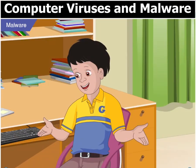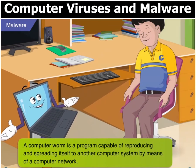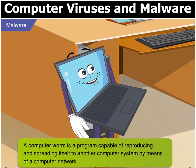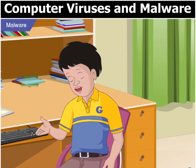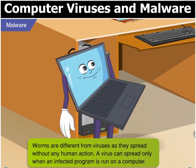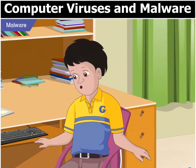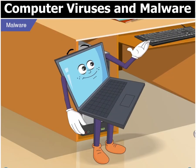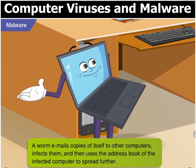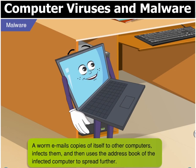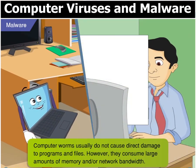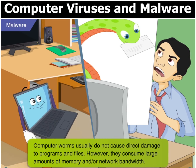But of these I know only about viruses. What are the other types of malware? Well, let's start with a worm. A computer worm is a program that reproduces and spreads to another computer system, usually by means of a computer network. But how is a worm different from a virus, Goggle? Worms are different from viruses as they spread without any human action. A virus spreads only when an infected program is run on a computer. Then how do these worms spread themselves? Using emails, Goggle. A worm first emails copies of itself to other computers and infects them. It then uses the address book of the infected computer to spread further. So, are worms as destructive as viruses? Computer worms usually do not cause direct damage to programs and files. However, they consume large amounts of memory and use up network bandwidth.